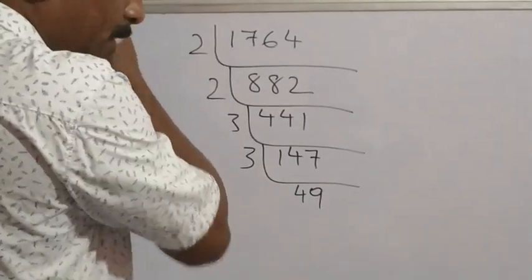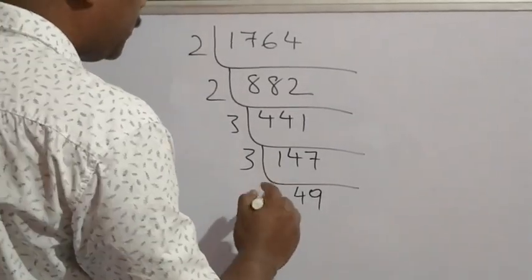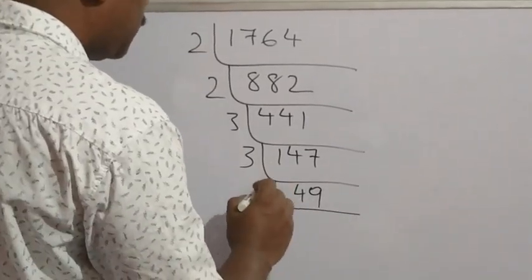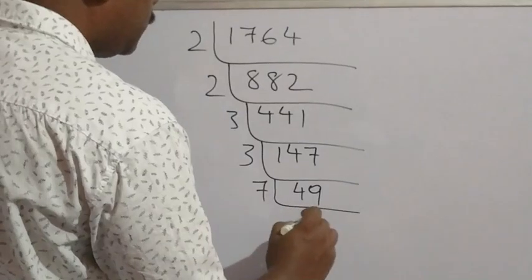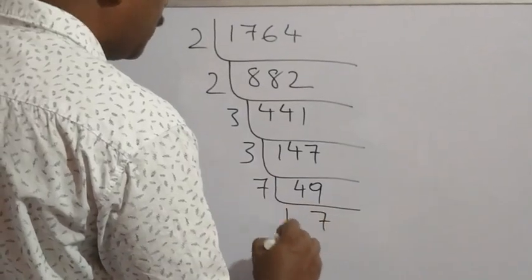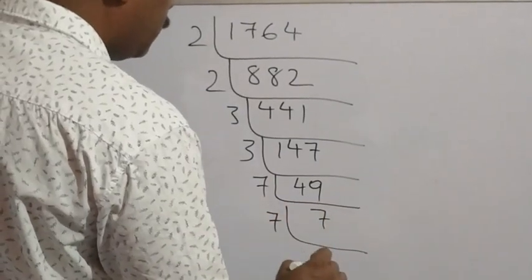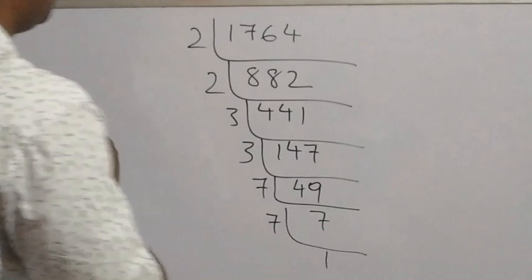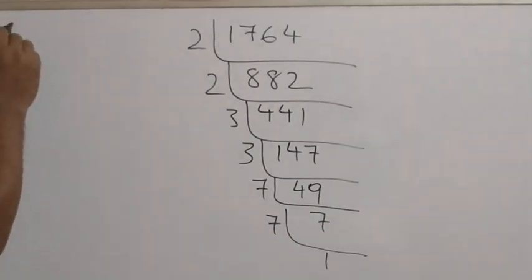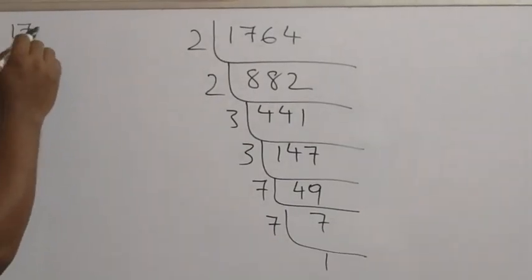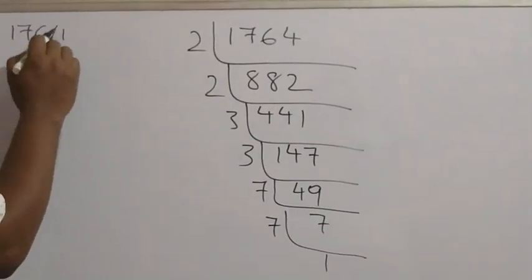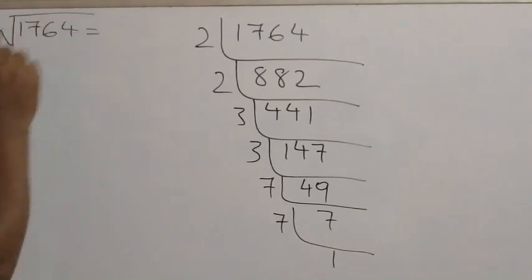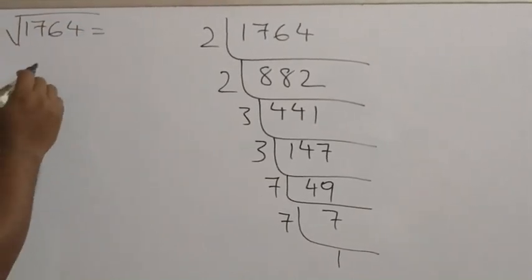Now again it is divisible by 7. Divide by 7, and then again divide by 7. So the prime factors of 1764 are obtained. The factors are the prime factorization of 1764.